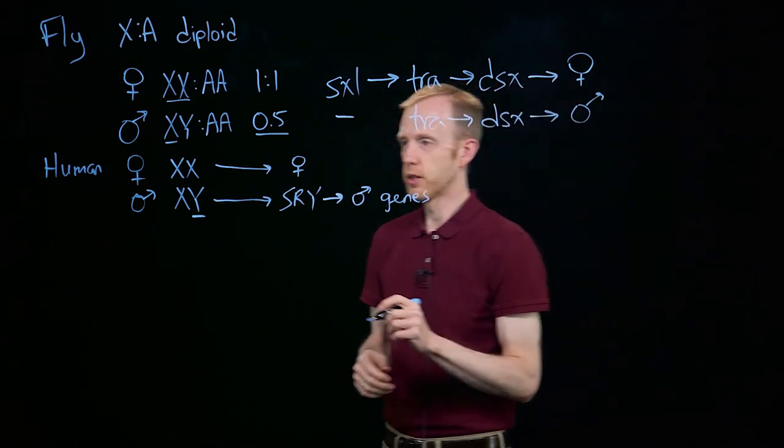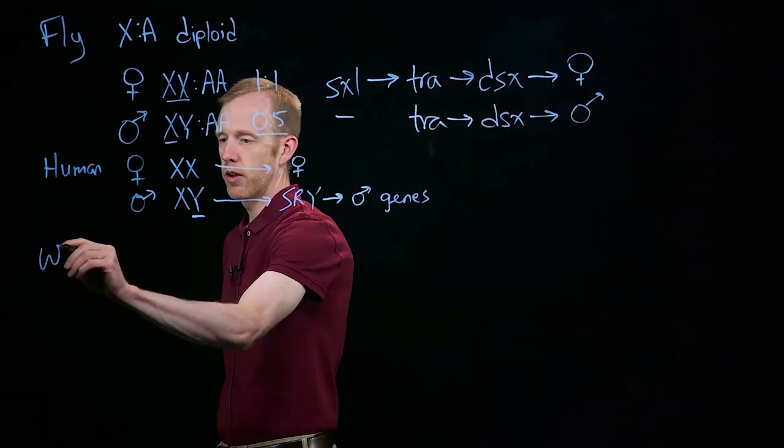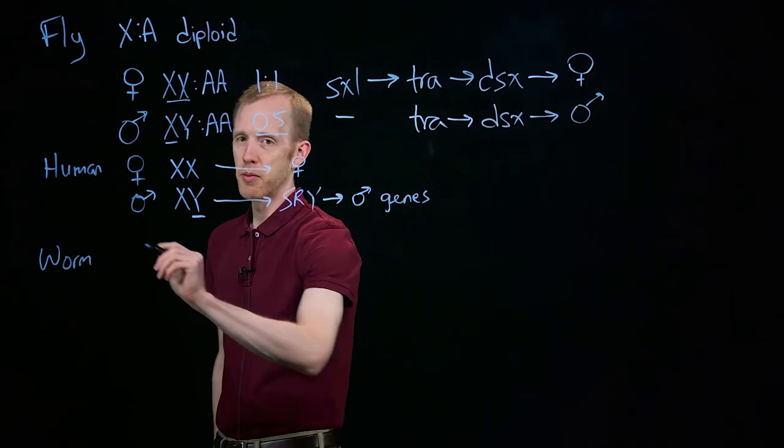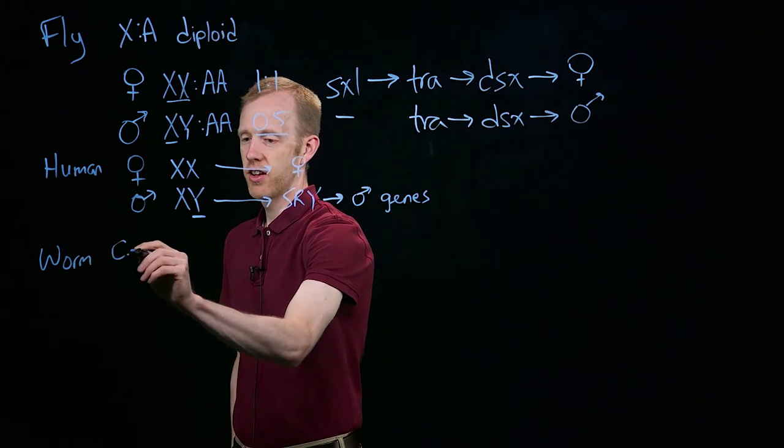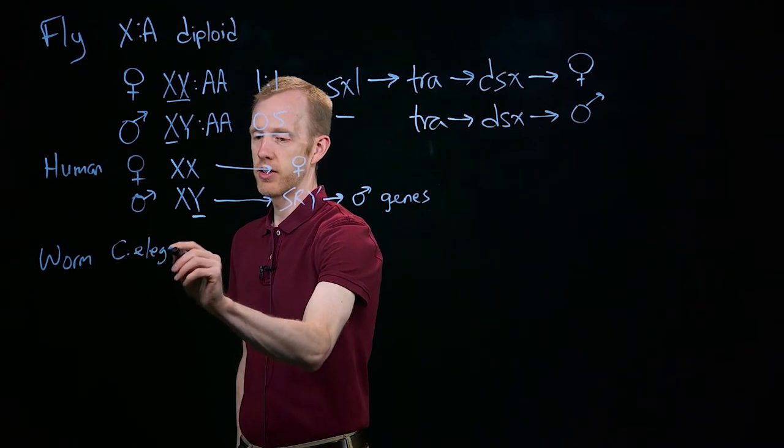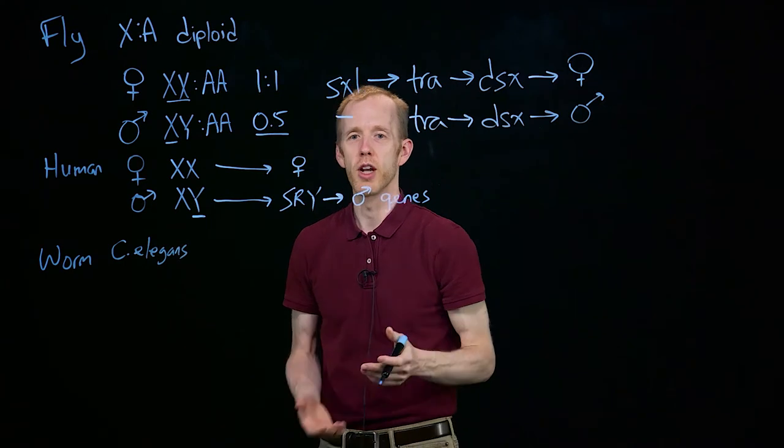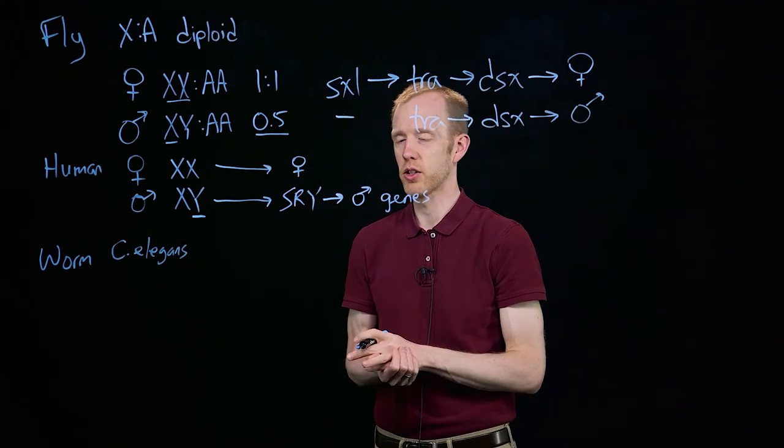A third type of organism I want to look at is the worm, and when I say worm, I mean C. elegans, Caenorhabditis elegans. It's not the only worm, but it's the best-studied worm in terms of genetics, especially in terms of sex determination.